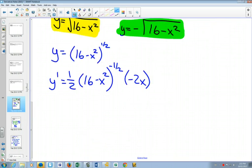A little bit of simplification. Here, can you see that the 2 and the 2 would cancel out? So we would be left with just a negative x on the top.